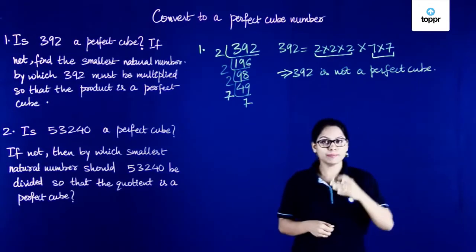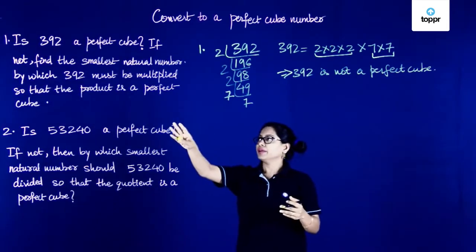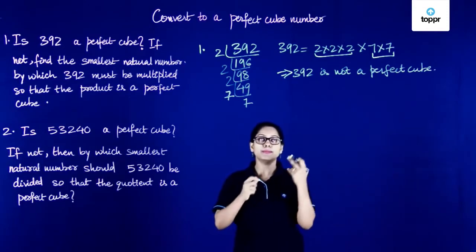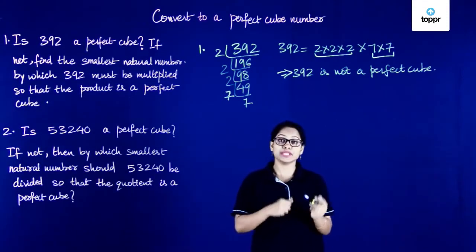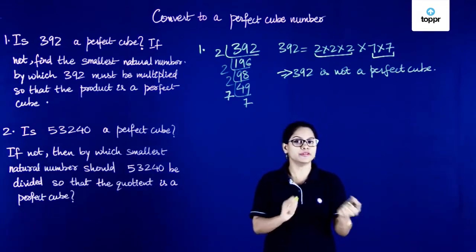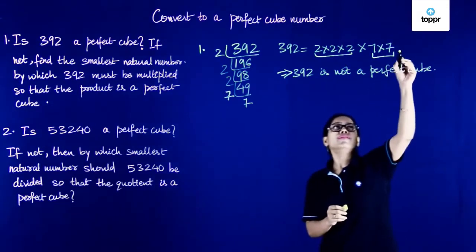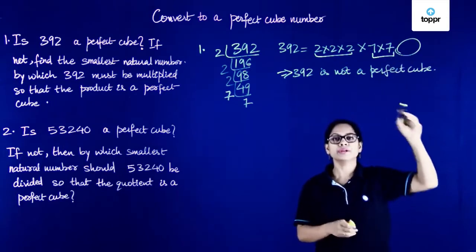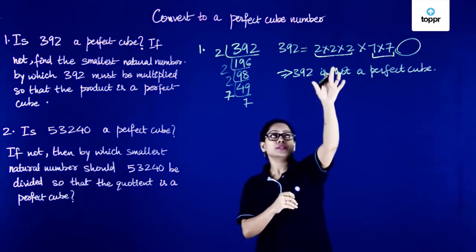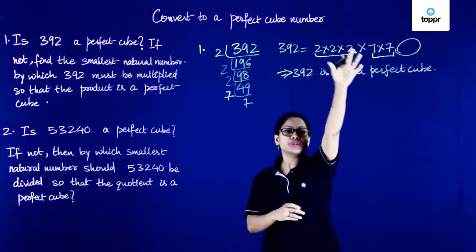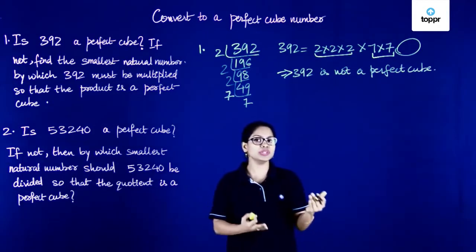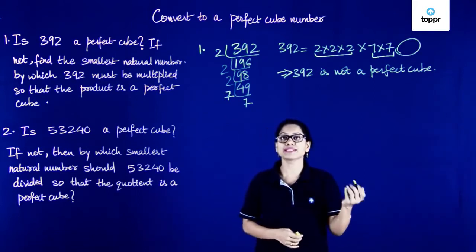Now let's move on to the second part of the question. We need to find the smallest number by which 392 must be multiplied so that it gets converted to a perfect cube. Now if we had another 7, the situation would be perfect — we would have a triplet of three 2's and three 7's. So the smallest number by which we need to multiply is 7.